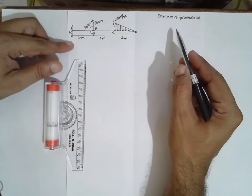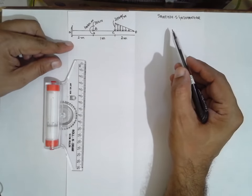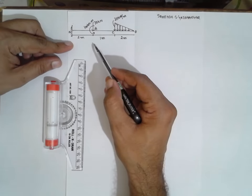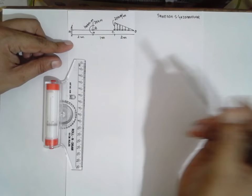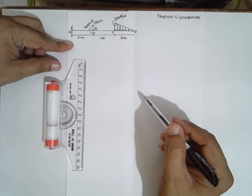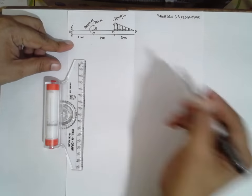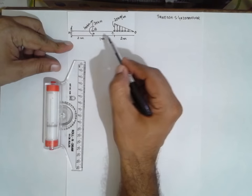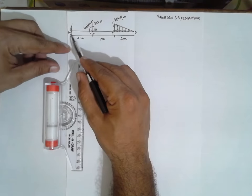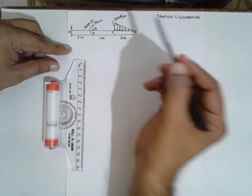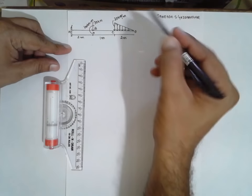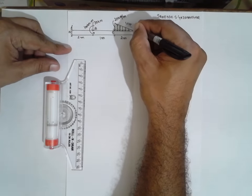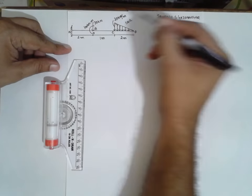I am Santosh Gaidankar. Today I am teaching you SFD and BMD — shear force diagram and bending moment diagram. It is a cantilever problem where UVL, uniform varying load, is provided.